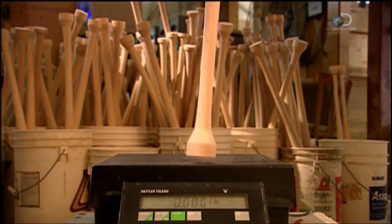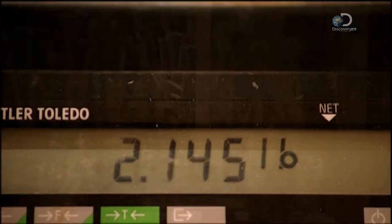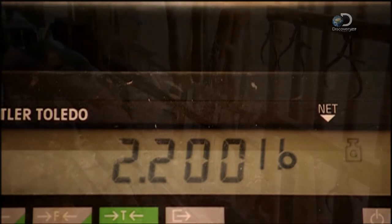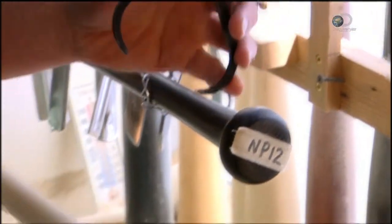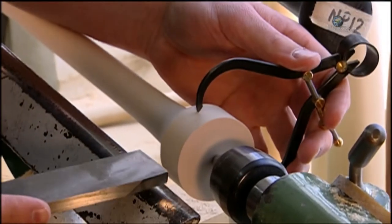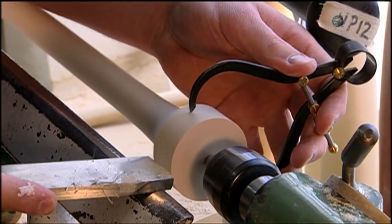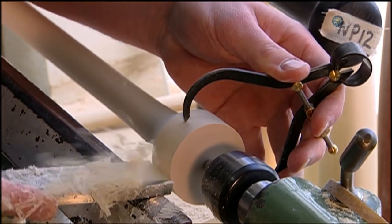The new bat's weight is checked. A caliper is used to measure the end of a completed bat. Using a square-edged scraper, the knob is rounded as the bat spins on a more traditional lathe.